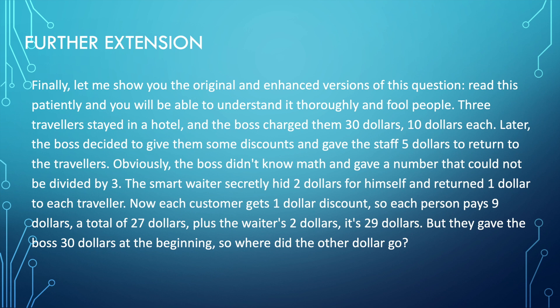Later, the boss decided to give them some discounts and gave the staff $5 to return to the travellers. Obviously, the boss didn't know math and gave a number that could not be divided by 3. The smart waiter secretly hid $2 for himself and returned $1 to each traveller. Now each customer gets $1 discount, so each person pays $9, plus the waiter's $2, so it's $29. But they gave the boss $30 at the beginning, so where did the other dollar go?